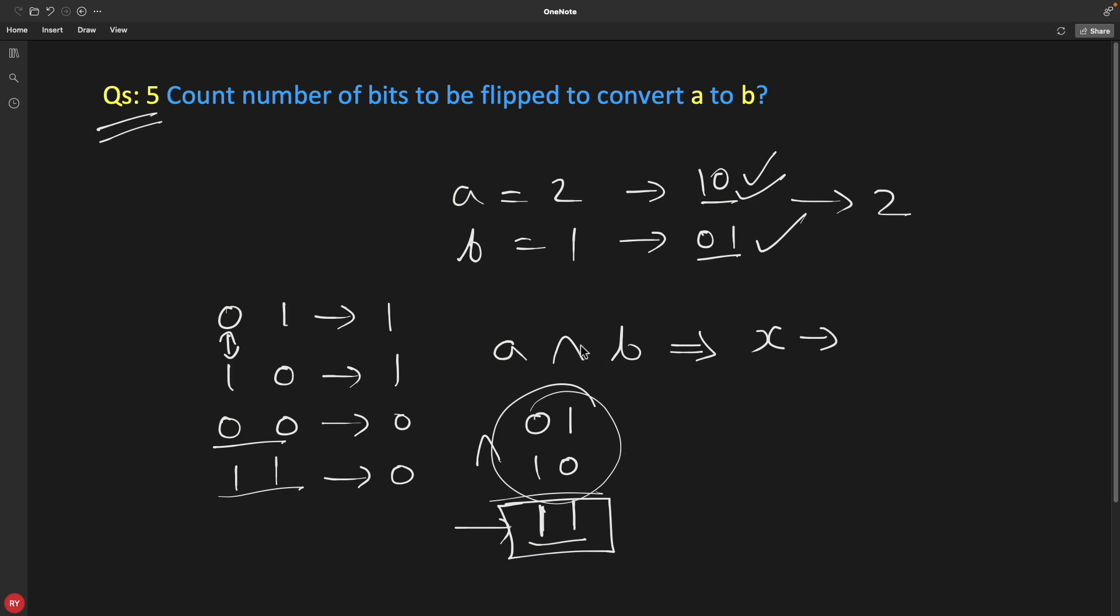I have already given a video on how to find set bits, so please check that out. This was one way. Another way could be: